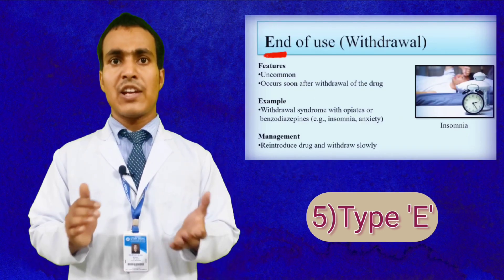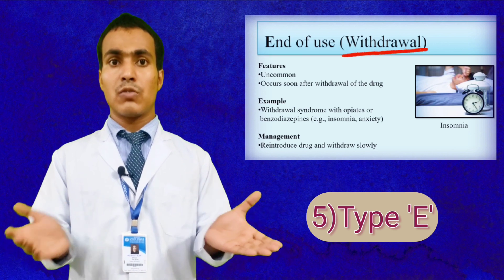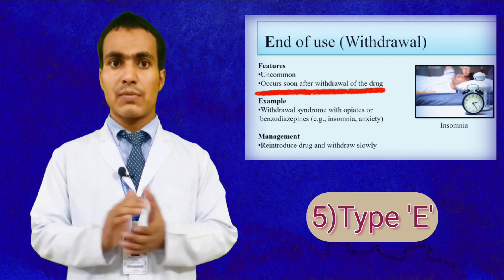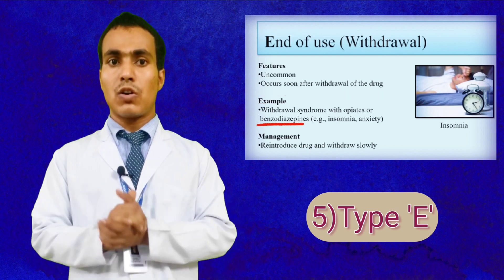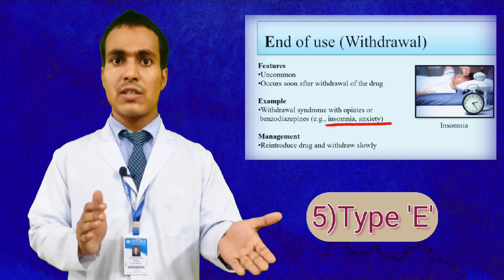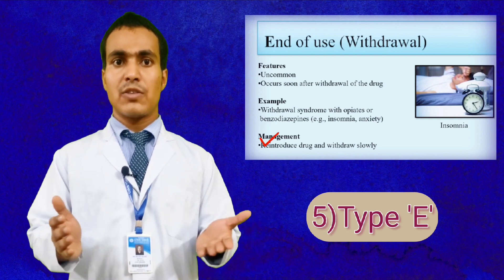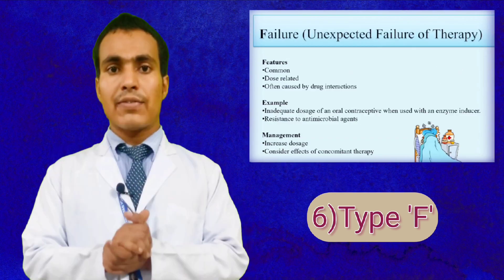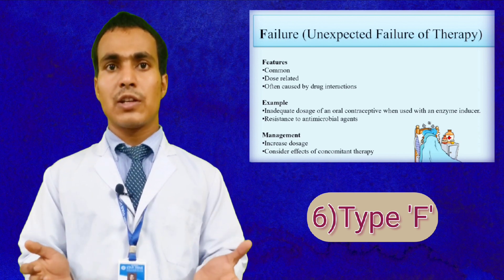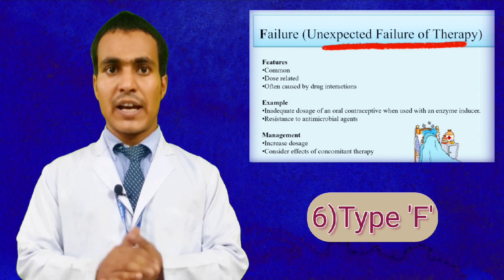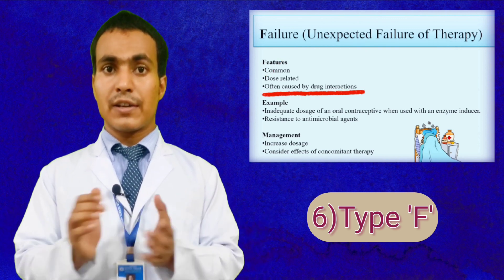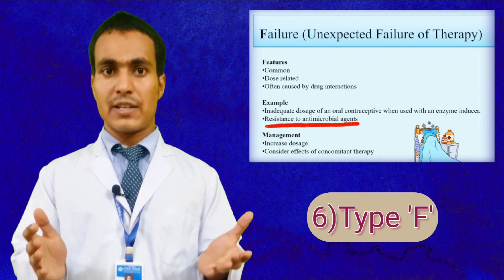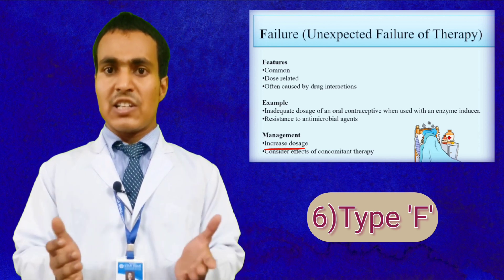Type E — End of use, related to drug withdrawal. It occurs after withdrawal of a drug; example is withdrawal of benzodiazepines causing insomnia and anxiety; management is to reintroduce the drug and withdraw slowly. Type F — Failure, related to unexpected failure of therapy, often caused by drug interactions; example is resistance to antimicrobial agents; management is increased doses.